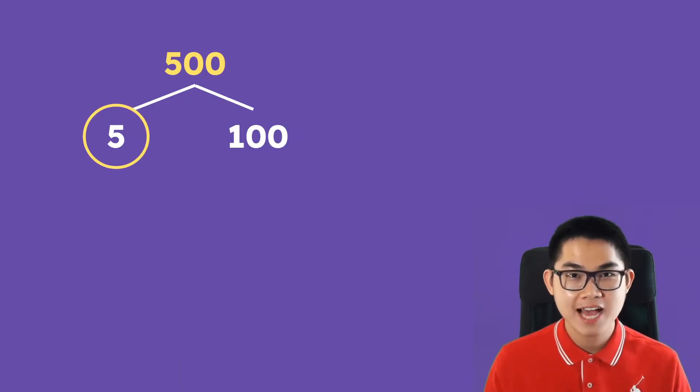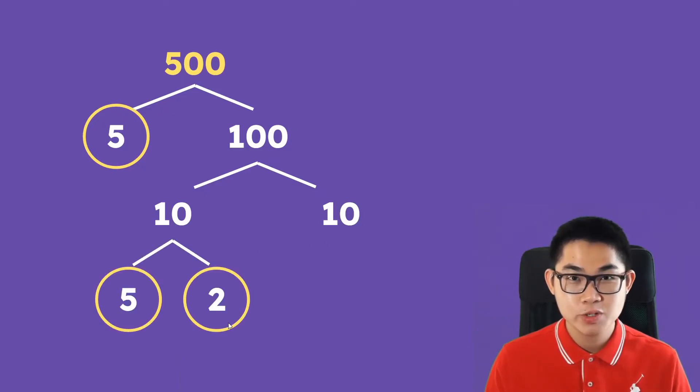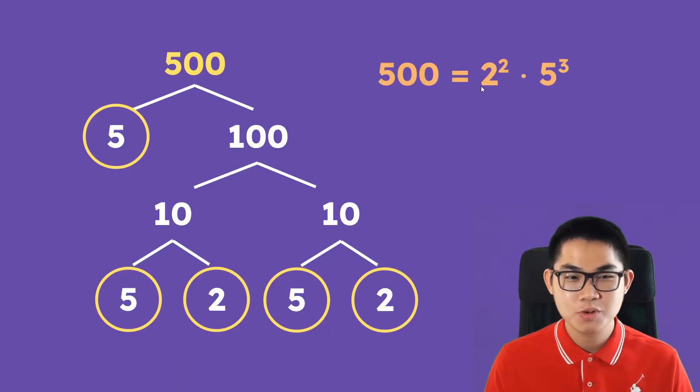500 is equal to 5 times 100 and 100 is equal to 10 times 10 and 10 is 5 times 2. Same thing for over here, 500 is equal to 2 to the power of 2 times 5 to the power of 3.